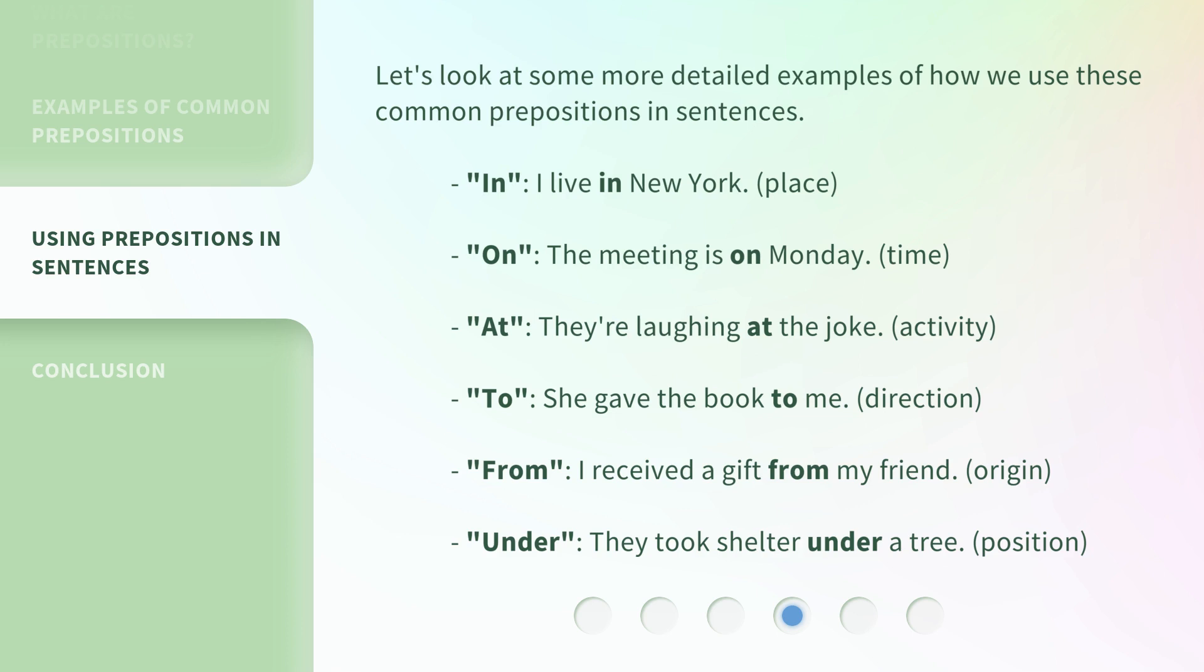To: She gave the book to me (direction). From: I received a gift from my friend (origin). Under: They took shelter under a tree (position).